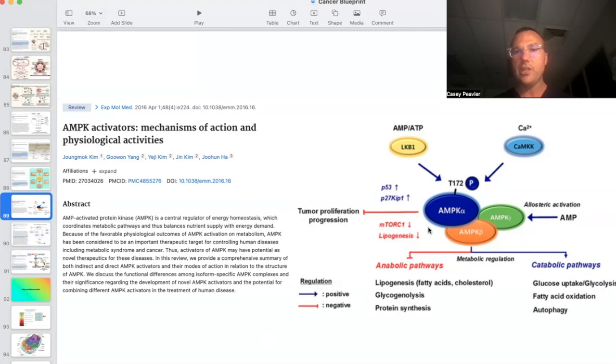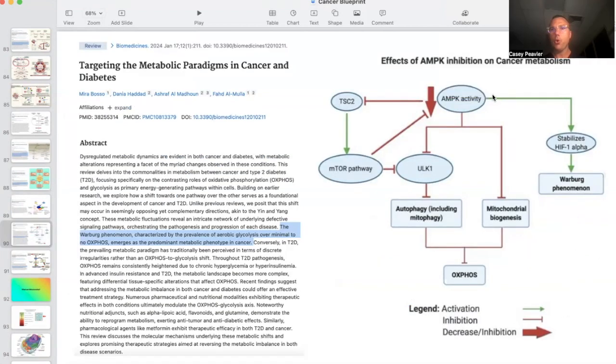So what we're seeing here on the right side is that when AMP is activated, it can first of all decrease several factors that are related to tumor proliferation and progression. It's going to decrease or cause negative feedback on anabolic growth pathways, and it's going to activate or have positive feedback on catabolic or breakdown products. Furthermore, when AMP kinase activity is low, it is going to stabilize HIF-1-alpha, which then promotes the Warburg phenomenon or Warburg effect.